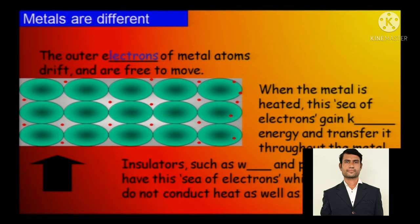From one atom to another atom, the electrons keep on bouncing. The more the number of free electrons, the better will be the heat transfer or the charge transfer in an electrical circuit. Now when the metal is heated, the sea of electrons gains kinetic energy.